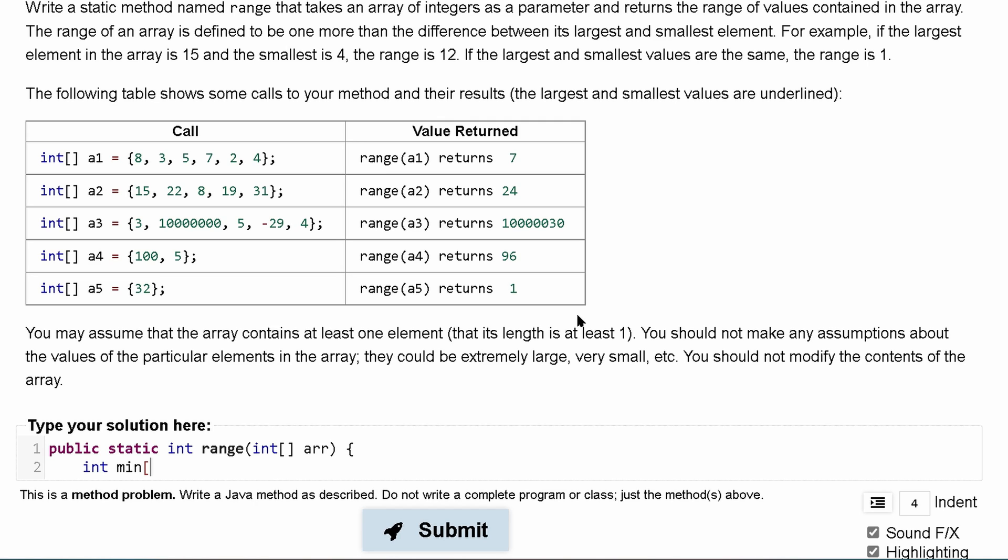So let's do int min and it should be equal to arr at the zeroth index because it has at least one thing in it. And we'll have max equal to arr at our zeroth index as well.